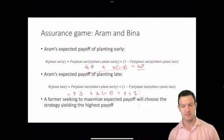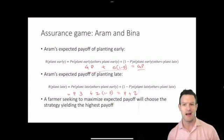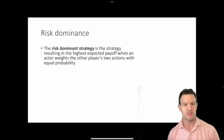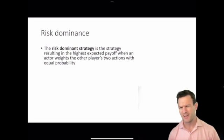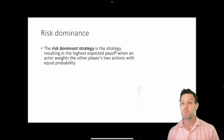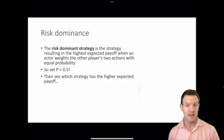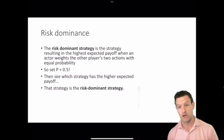Now, we can think about maximizing your expected payoffs and preferring the strategy which gets you the higher expected payoff. We're going to use an idea called risk dominance. The risk dominance strategy is the strategy resulting in the highest expected payoff when an actor weights the other player's two actions with equal probability — that is, 50-50. So we set P equal to 0.5, and then check which strategy produces the higher expected payoff.